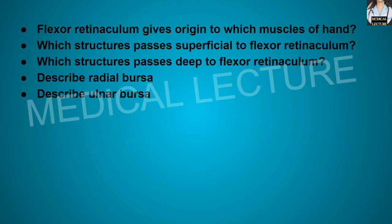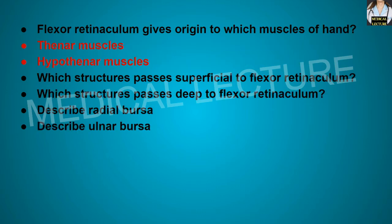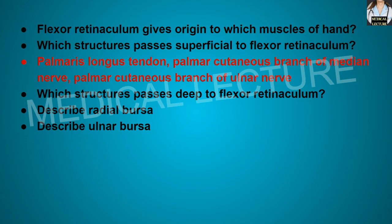Flexor retinaculum gives origin to which muscles of the hand? It gives origin to the thenar muscles and the hypothenar muscles. Which structures pass superficial to the flexor retinaculum? The palmaris longus tendon, palmar cutaneous branch of the median nerve, and the palmar cutaneous branch of the ulnar nerve pass superficial to the flexor retinaculum.